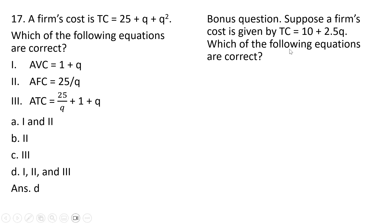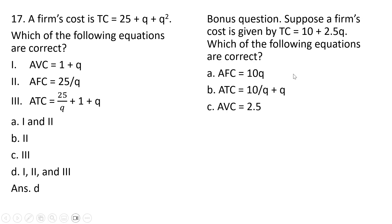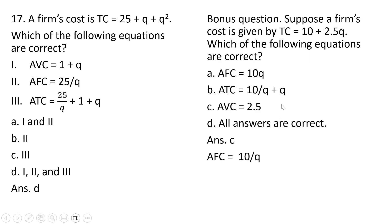Bonus question. Suppose a firm's cost is given by the following equation. Which of the following equations are correct? The correct answer is C. Average fixed cost is 10 divided by q, not 10 times q. Average total cost is 10 divided by q plus 2.5 — taking the equation and dividing completely through by q. Statement B is incorrect. And average variable cost is 2.5 — you take the 2.5q term and divide by q, leaving average variable cost.